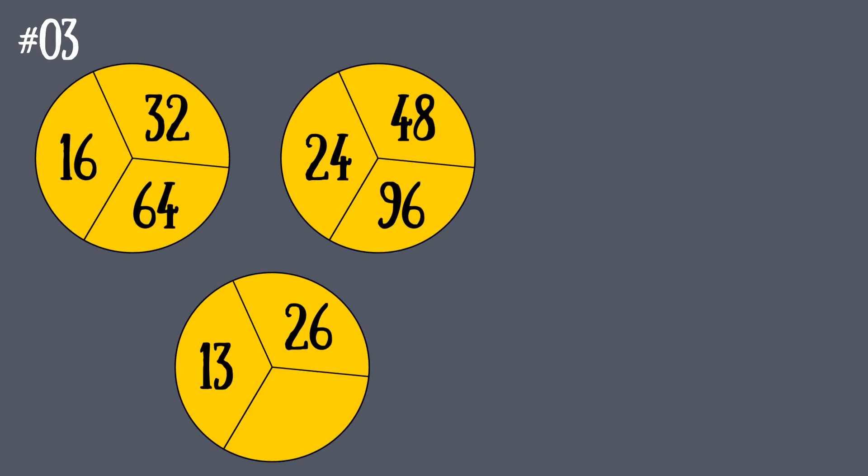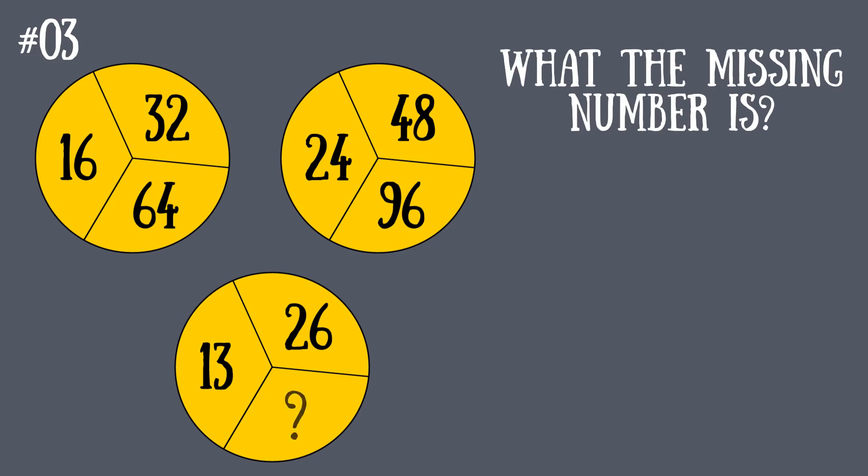Riddle number three: Here we have three circles, each divided into three parts with numbers inside of them. Can you determine the pattern and figure out what the missing number is in the last circle? You have only 15 seconds.